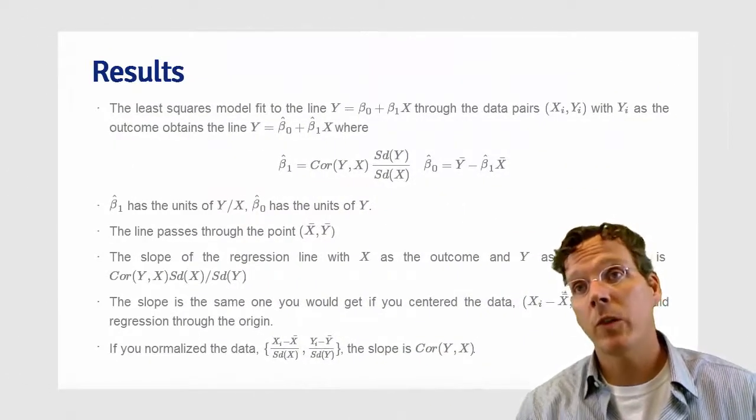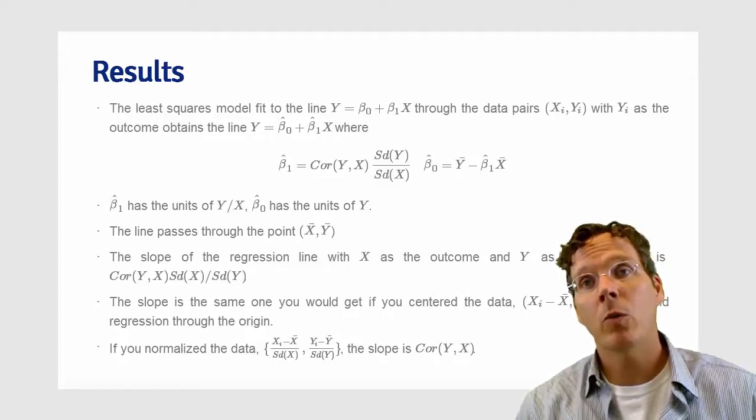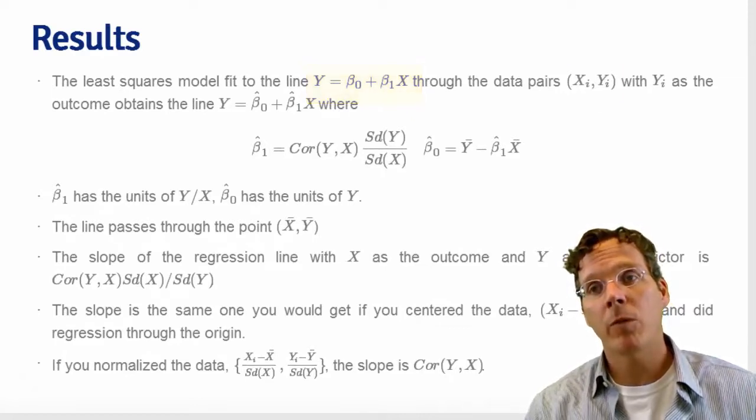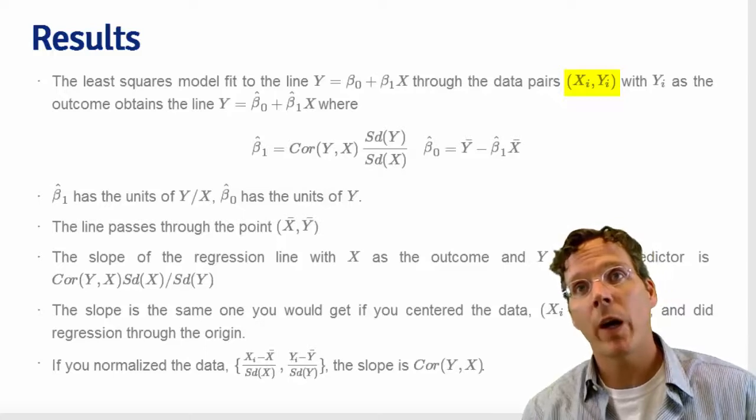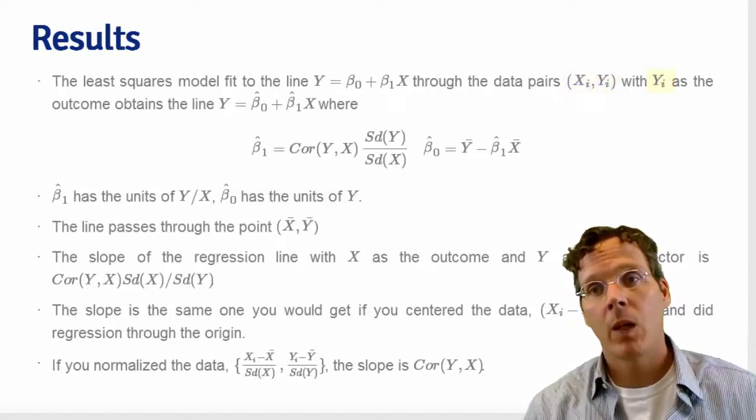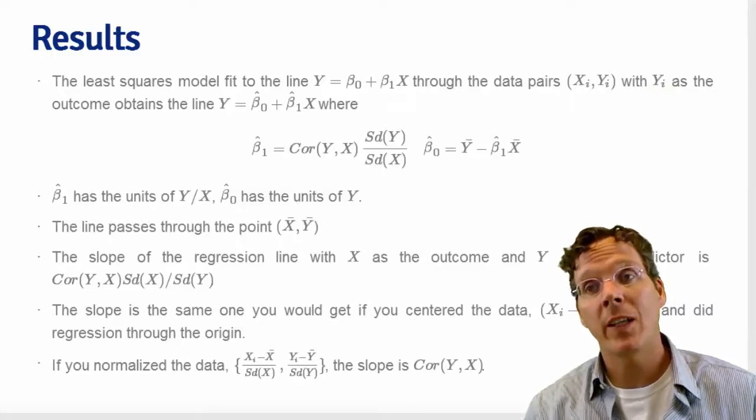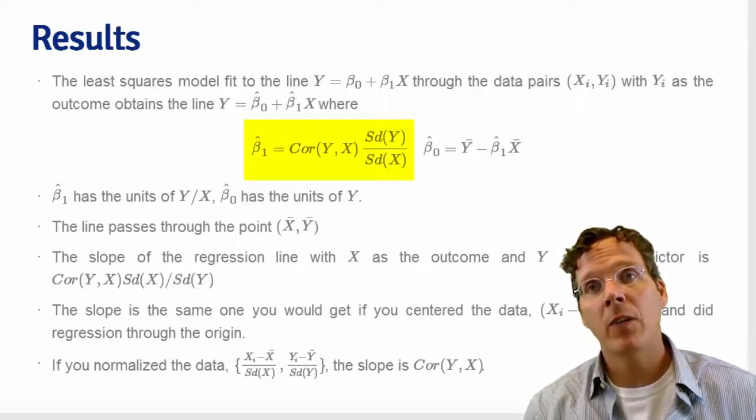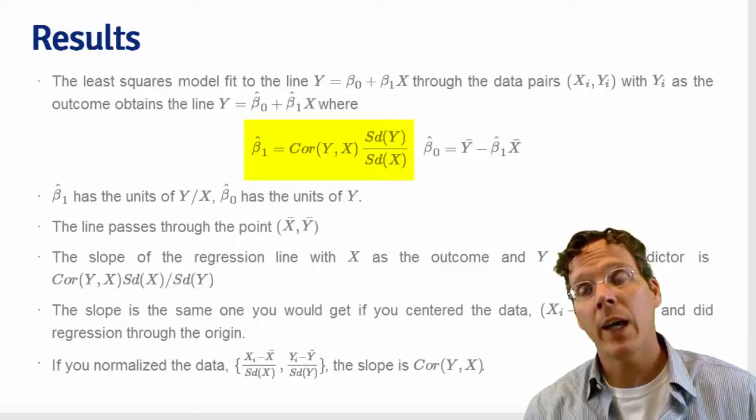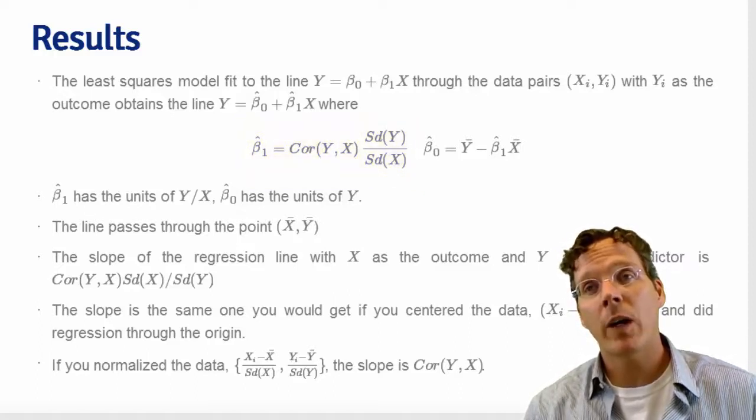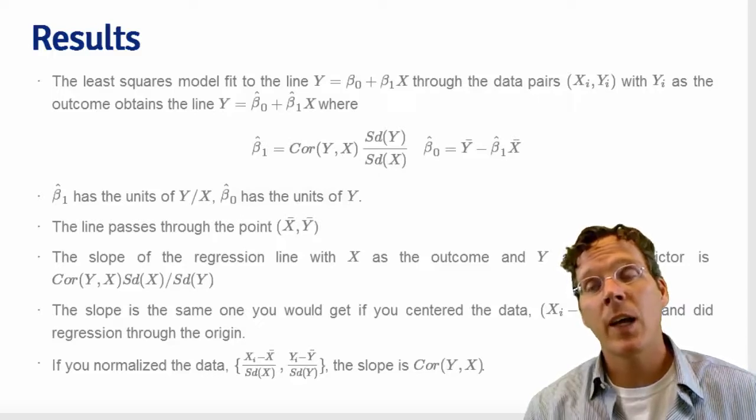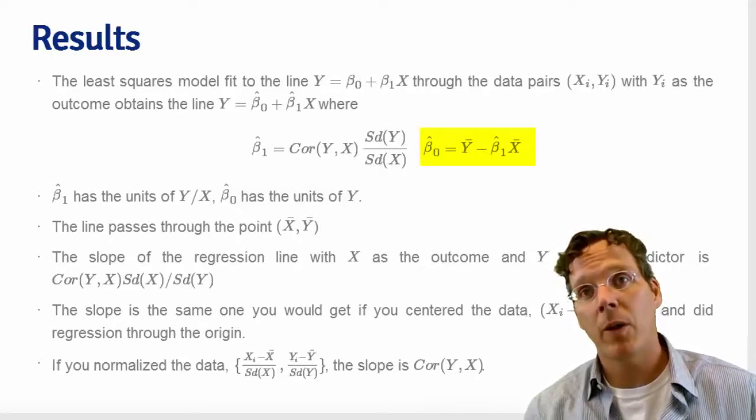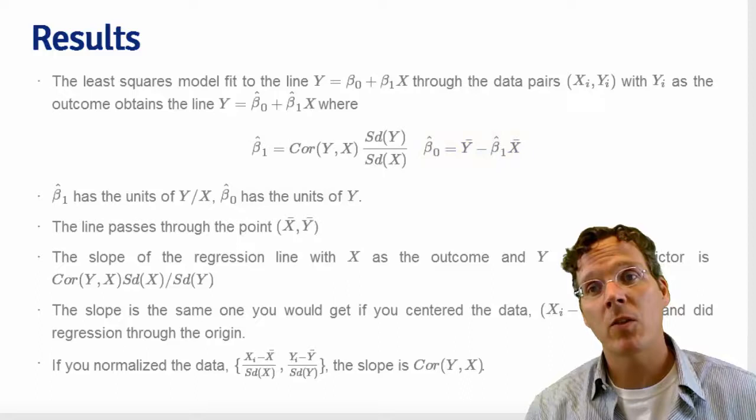Let's discuss what the answer is when you perform this model fit. We want the line y equals beta0 plus beta1 x, and we're going to fit it through a scatter plot of points xi, yi, where yi is the outcome. We put little hats over beta0 and beta1 to indicate the estimated values. The solution works out to be beta1 hat is the correlation between y and x times the standard deviation of y divided by the standard deviation of x. The estimated intercept, beta0 hat, is y bar minus beta1 hat times x bar.